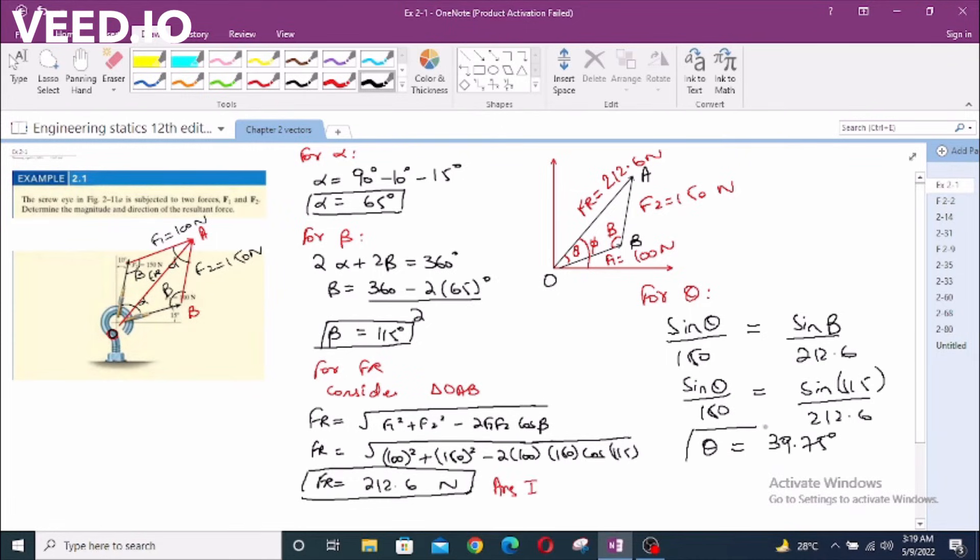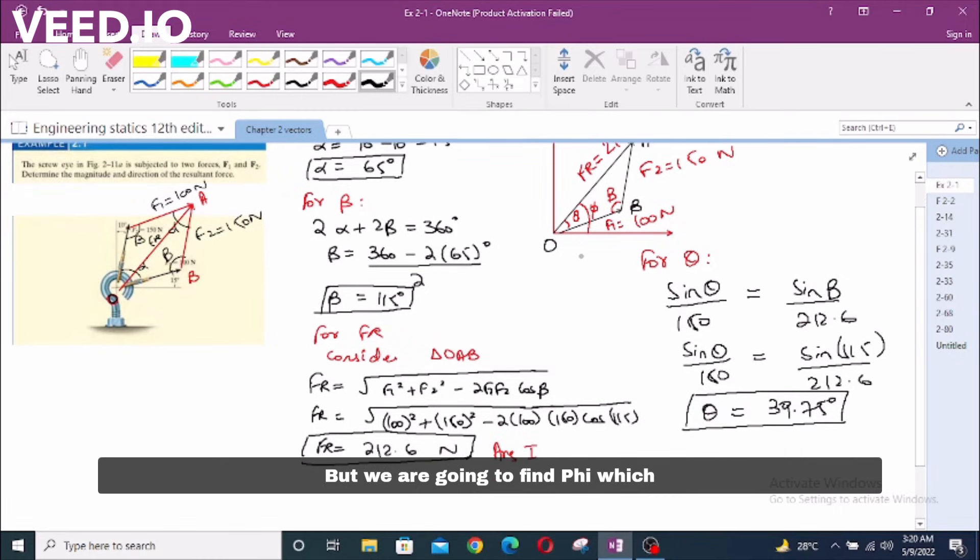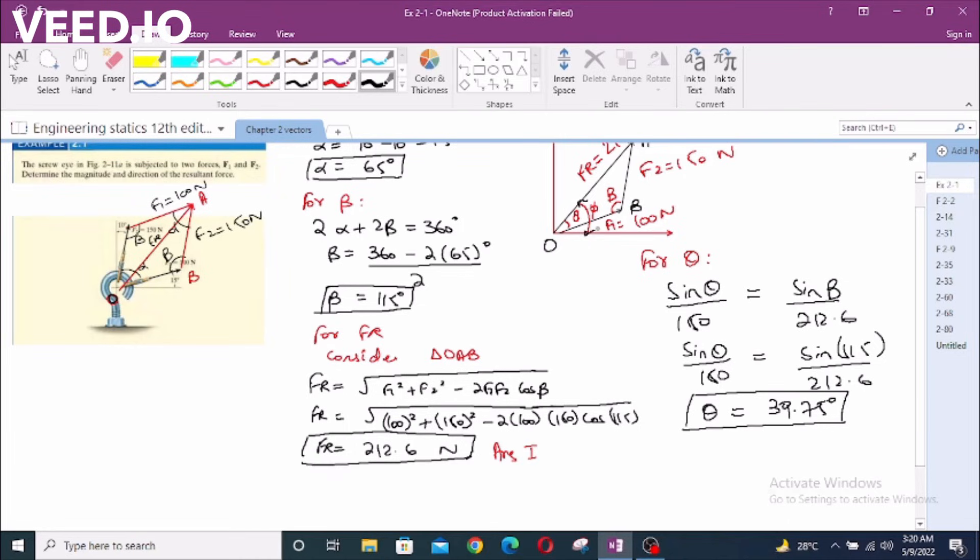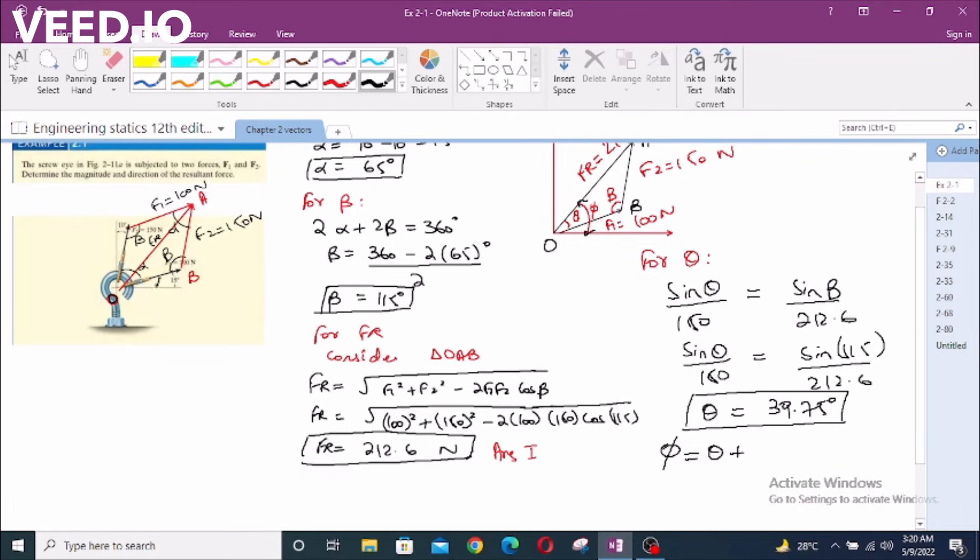But we are going to find phi which is the original angle for the resultant force. Phi is equal to theta plus 15 degrees, these 15 degrees.